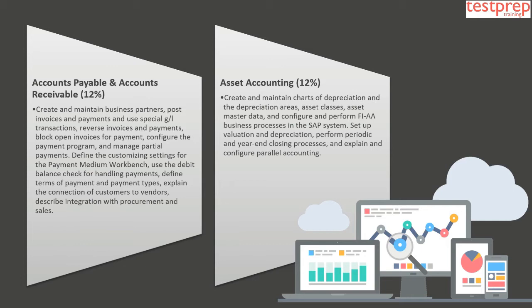Domain 4: Asset Accounting, which comprises 12% weightage in the exam. This covers creating and maintaining charts of depreciation and depreciation areas, asset classes, asset master data, and configuring and performing FI-AA business processes in the SAP system. Set up valuation and depreciation, perform periodic and year-end closing processes, and explain and configure parallel accounting.